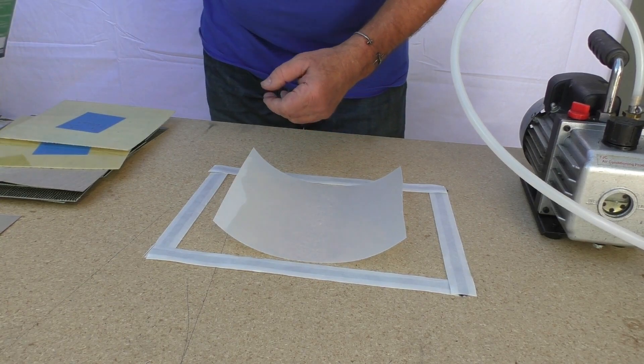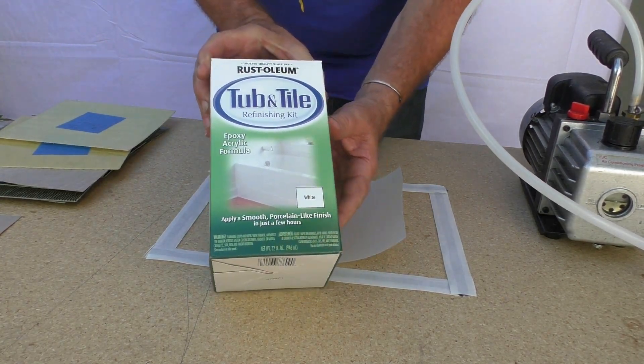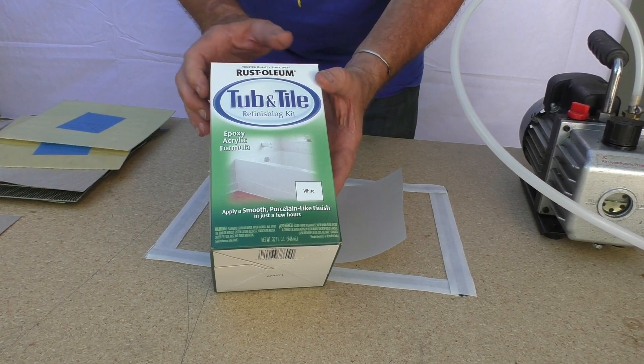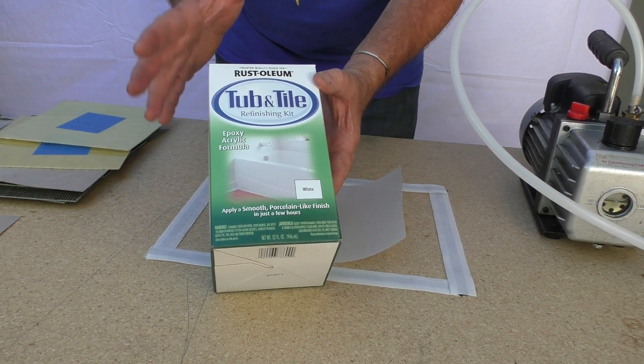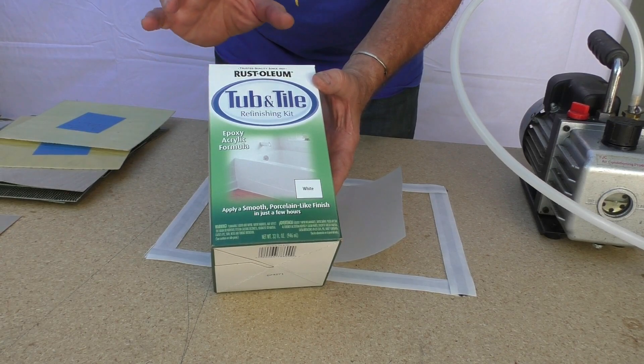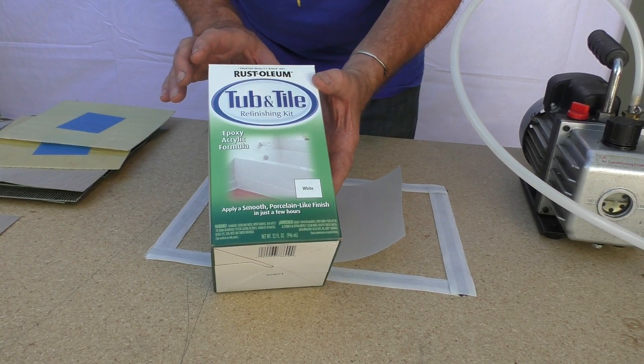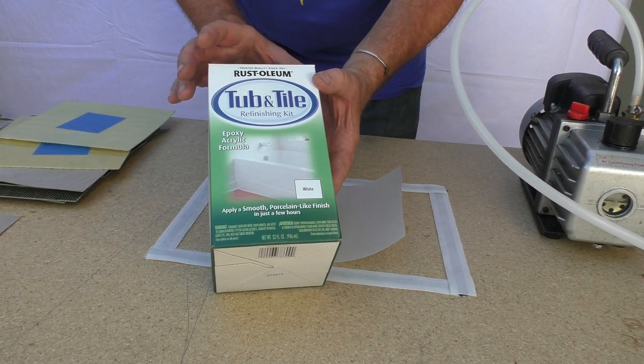Now for paint today, and what I've been using on the project as I go along is this tub and tile. It's available on Amazon. It's an epoxy paint and I've gotten really good results with it. High sheen finish, very smooth, easy to work with, reliable, and cost-effective.